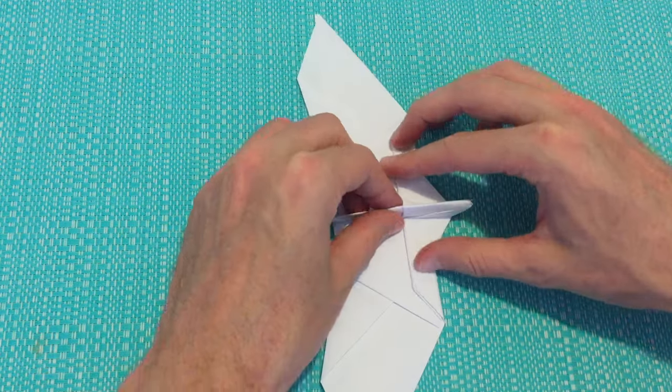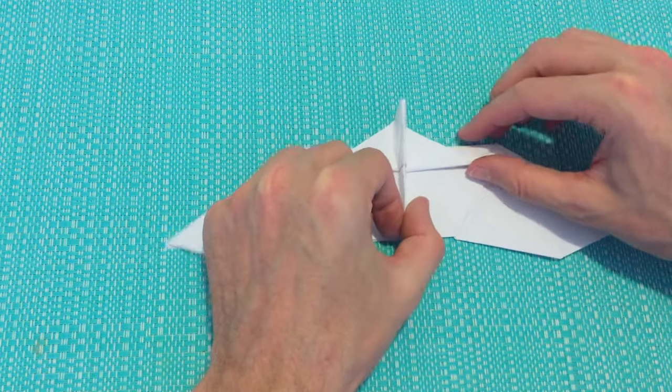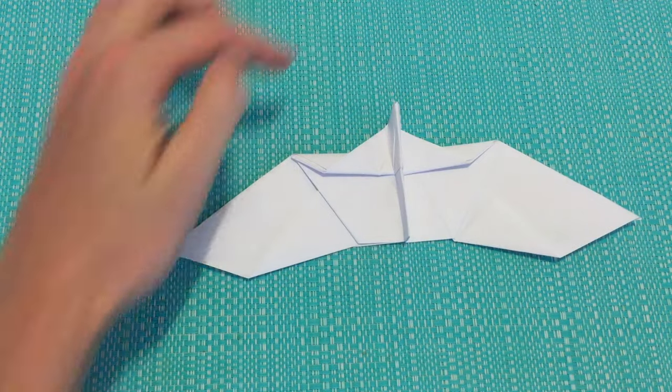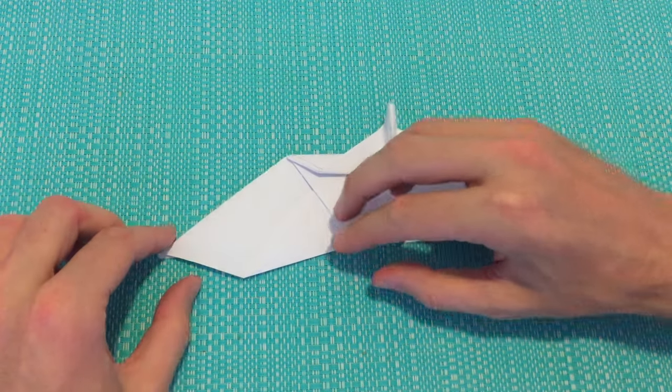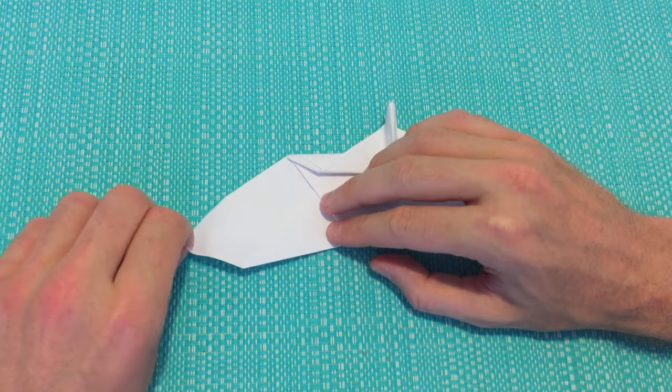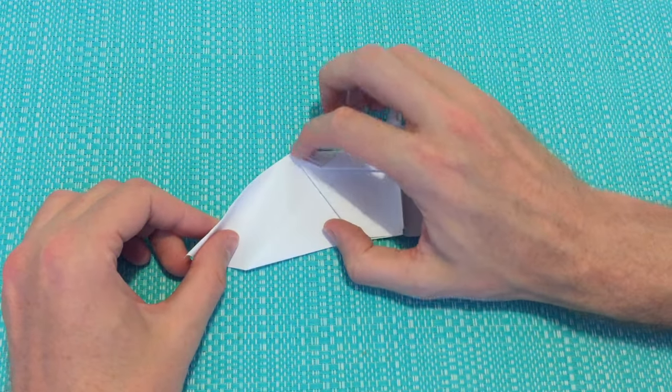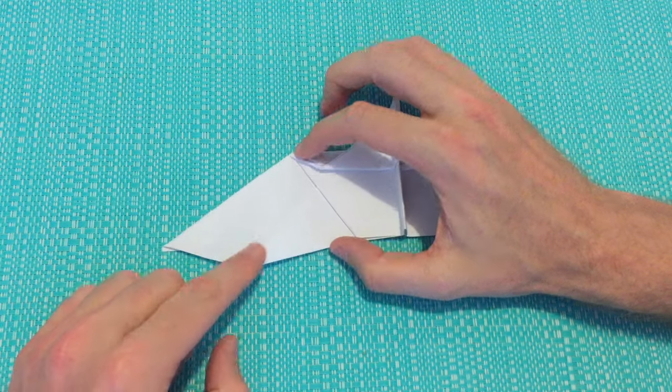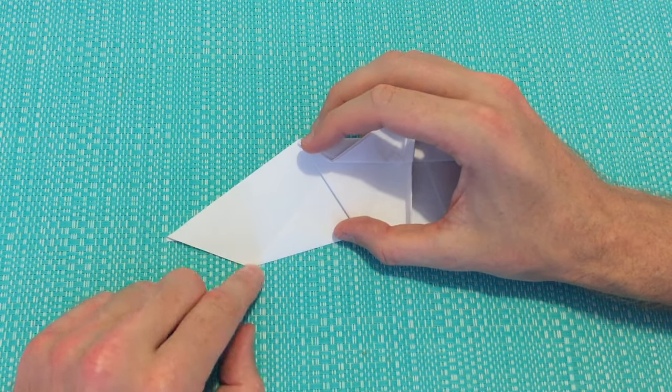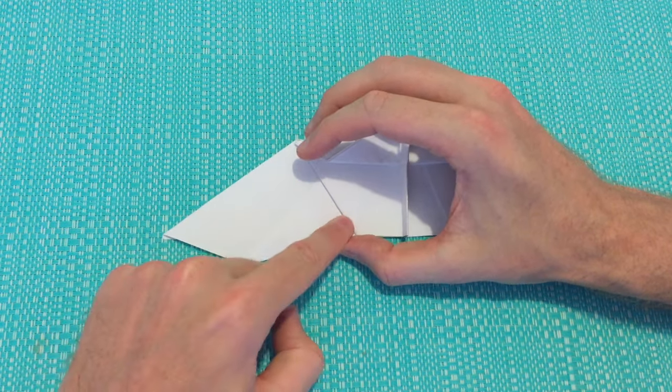And we can then open it up. We'll just place it so the nose is facing upwards. Next we're going to be folding in the tips of our wings. So we'll take the left tip and we want this fold to run from this top point here down to the bottom here, just at the edge of this triangle.